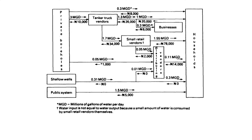Here's an example of a money and water flow diagram for Onitsha, Nigeria in 1987 during the dry season. Onitsha is one of the largest market towns in West Africa, located on the banks of the Niger River in Anambra State. In 1987, it had a population of about 700,000 people.